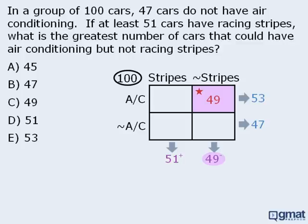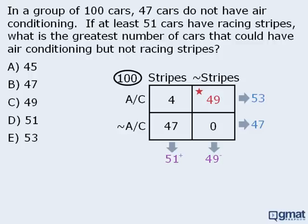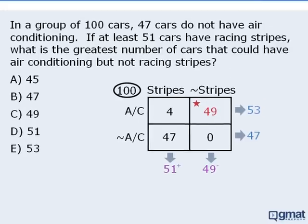Let's see if it's possible to have 49 cars in the target box without contradicting any of the given information. If the sum of the two highlighted boxes must add to at most 49, then this box must contain zero cars — this way the total number of cars without racing stripes does not exceed 49. Since these two boxes must add to 53, this box will contain 4 cars. And since these two boxes must add to 47, this box will contain 47 cars. Since it is possible for the target box to contain 49 cars without contradicting any of the given information, we have maximized the number of cars in this box. So our answer is C.